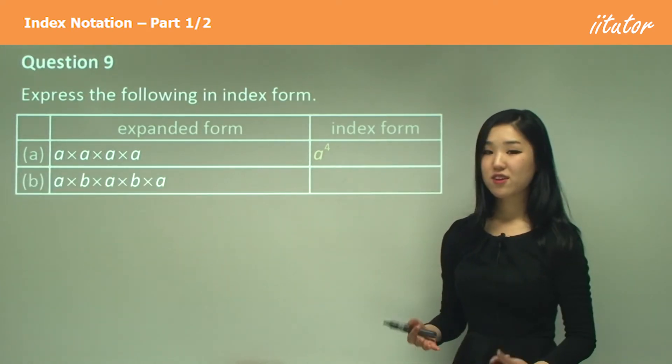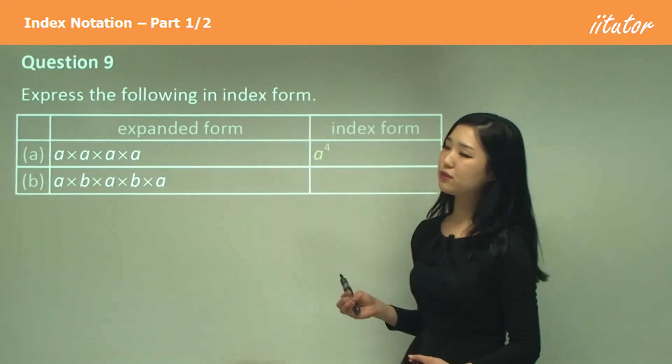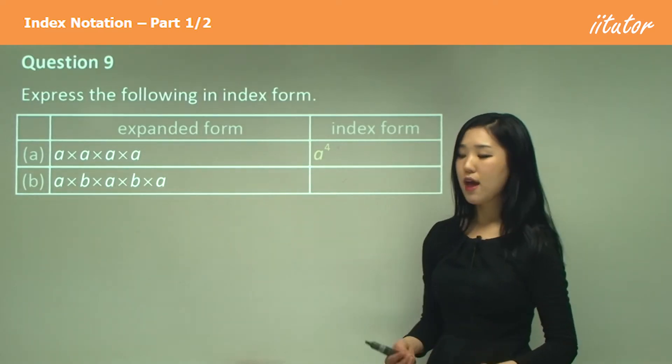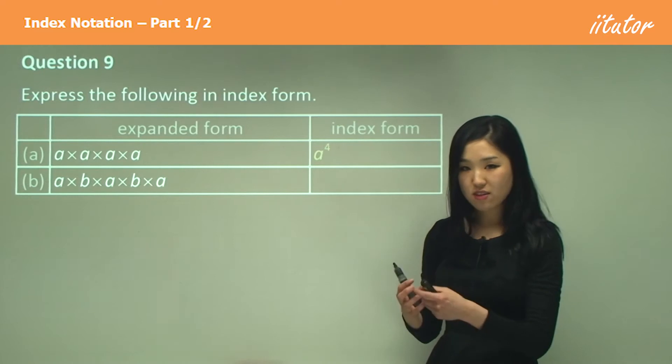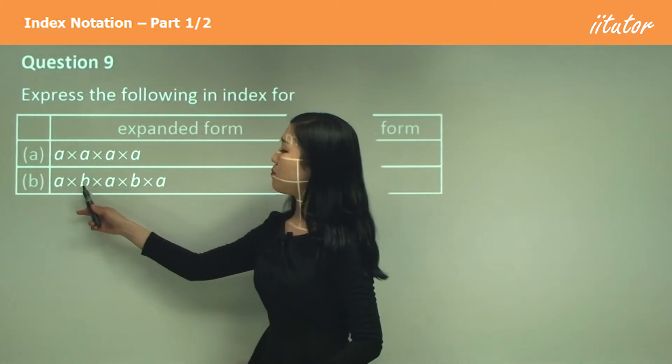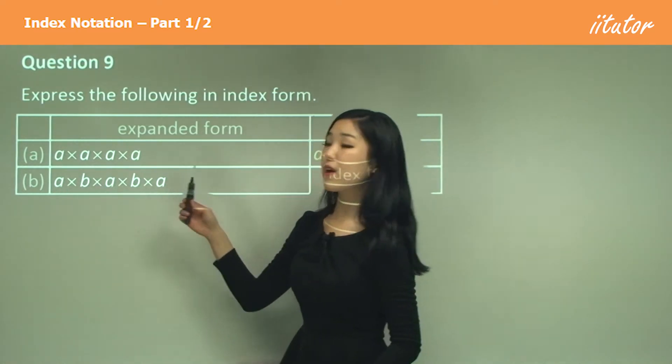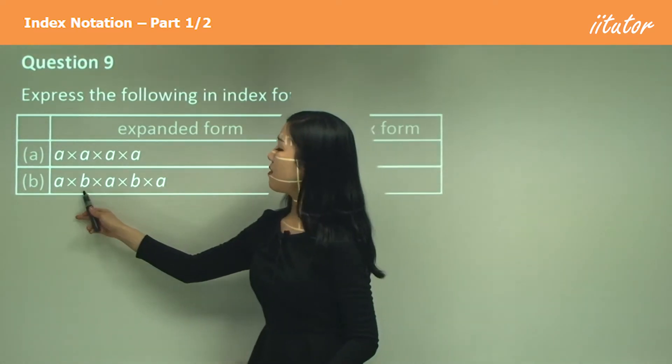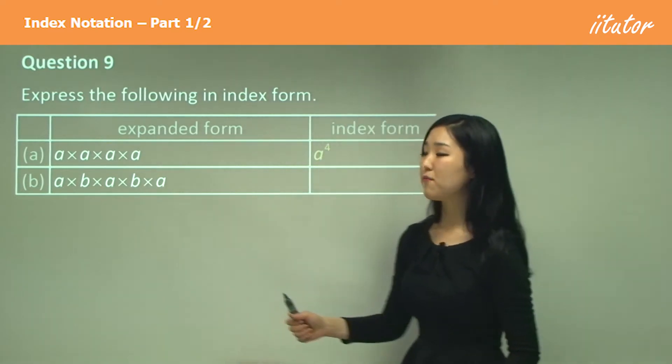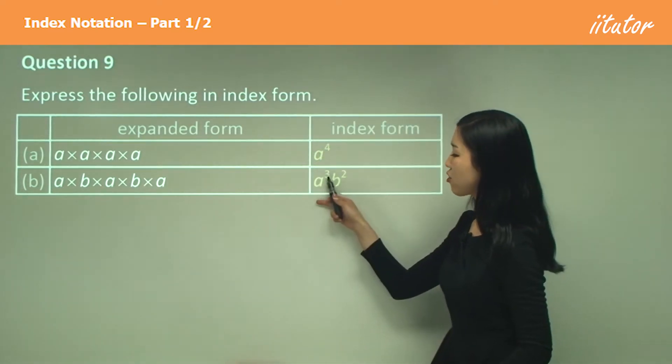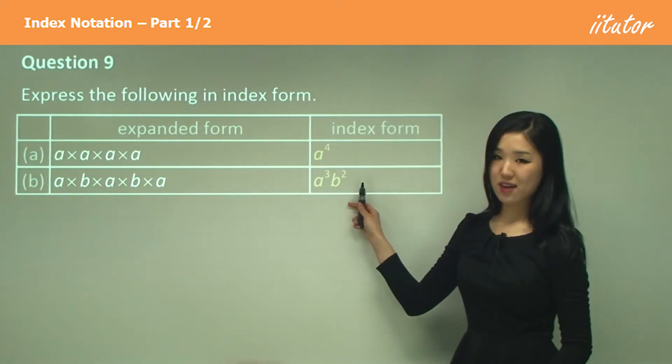So b, you can tell me the answer but it's a little bit different because we've got different pronumerals. And make sure guys you gather the like terms together. So here there's a and b. So how many a's? There's one, two, three a's. And b, there's one, two b's. So it's going to be a cubed times b squared.